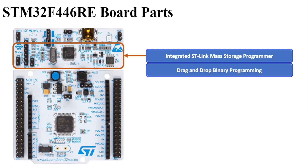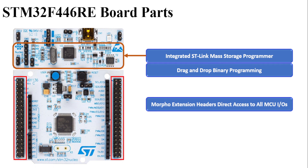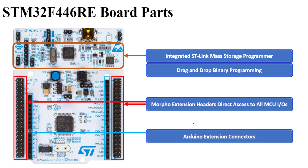This full board can be divided into two parts. The lower part contains the main microcontroller and the upper part contains another microcontroller which acts as the debugger and programmer. So the upper section is your programmer which will help you to upload your codes. All the Morpho extension headers are directly connected to the microcontroller pins, and the board also has an Arduino extension connector, giving it compatibility with Arduino connectors.